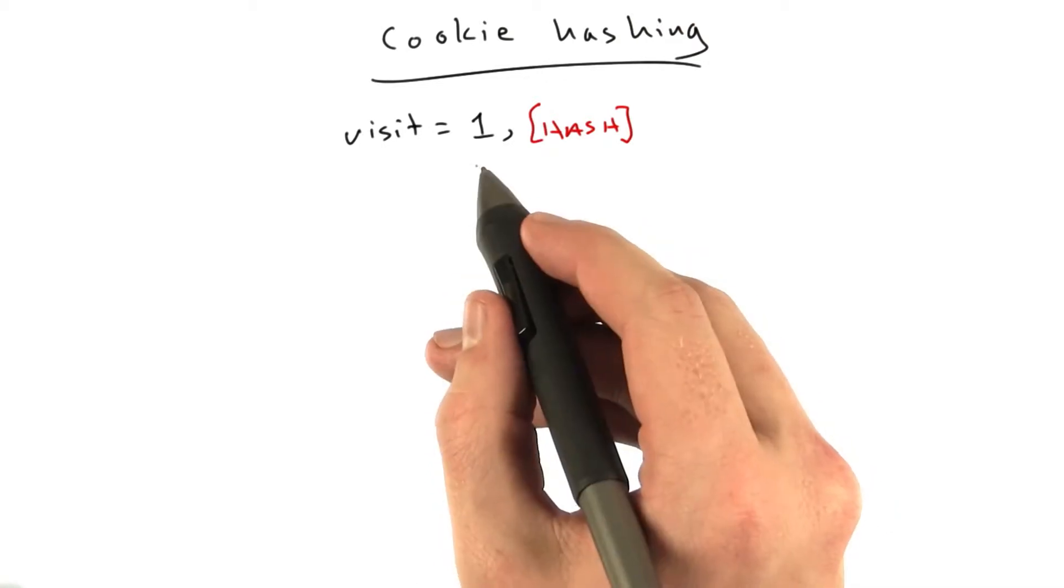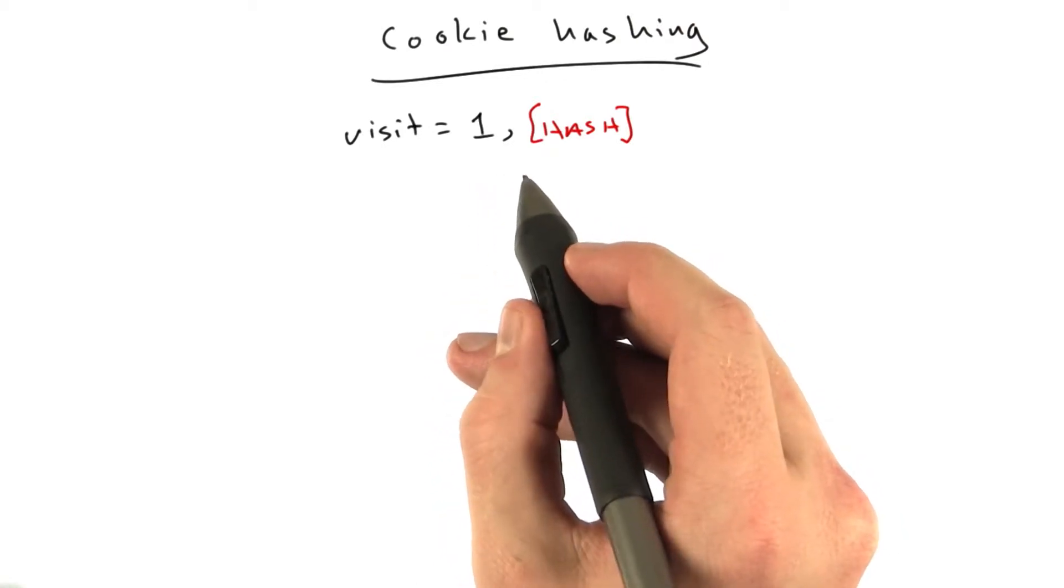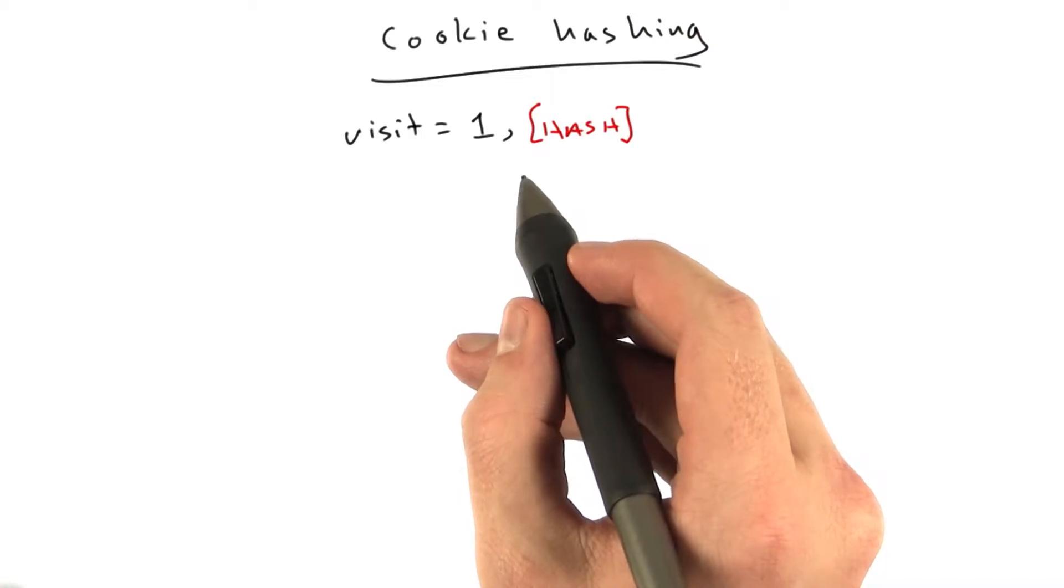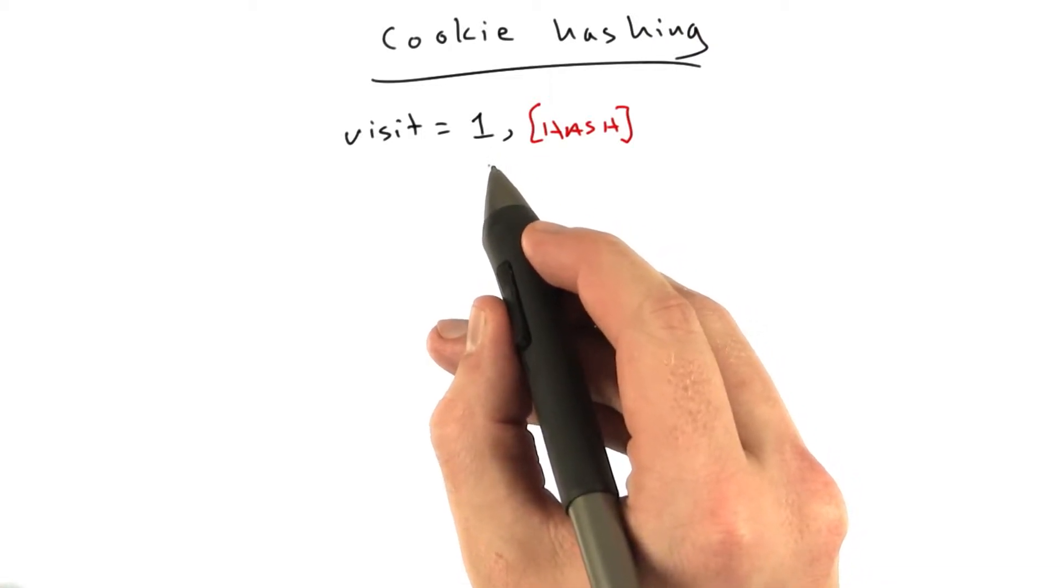Now, does this really solve our problem? A little bit, but if they know we're using MD5, which is pretty easy to guess, it's easy to forge a cookie, right?